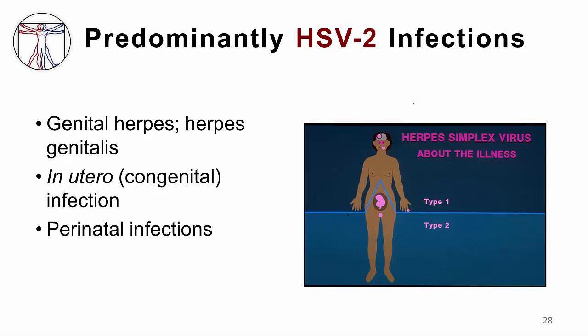In contrast, HSV-2 infections occurring below the belt are responsible for genital infections. When a pregnant mother is infected, there is the possibility of congenital or perinatal infection — meaning infection around the time of delivery.